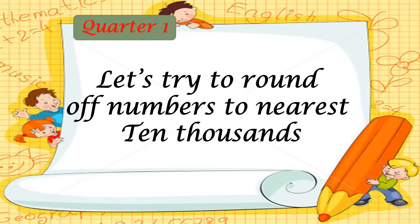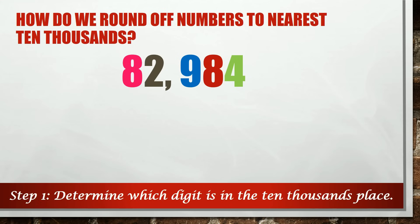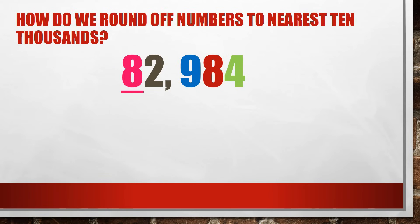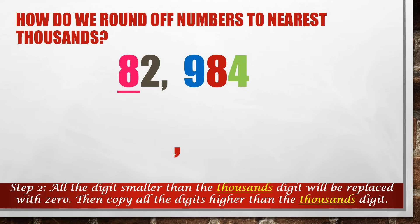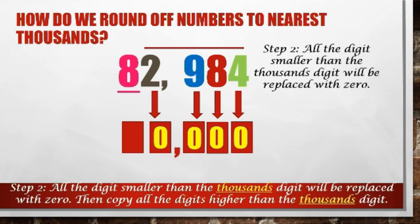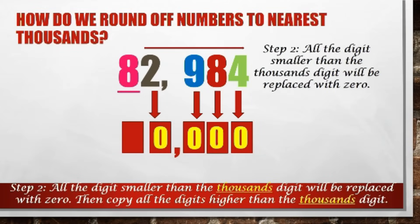Let's try to round off numbers to the nearest ten thousands. Let's round off 82,984 to the nearest ten thousands. Step 1: determine which digit is in the ten-thousands place — ones, tens, hundreds, thousands, ten-thousands. 8 is in the ten-thousands place. Let's underline 8 as the digit we need to round off. Step 2: all digits to the right of 8 will be replaced with 0 — so 4 becomes 0, 8 becomes 0, 9 becomes 0, and 2 becomes 0. Then copy all digits higher than the ten-thousands digit. In this example, no digit is higher, so we proceed to the next step.